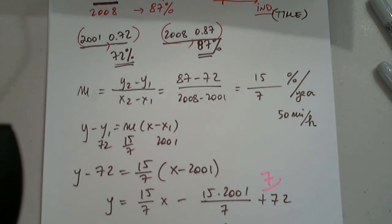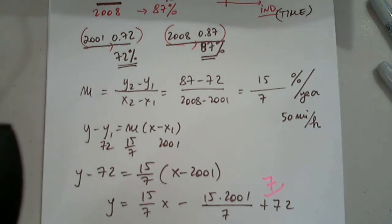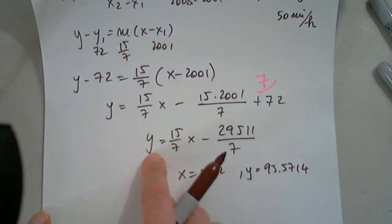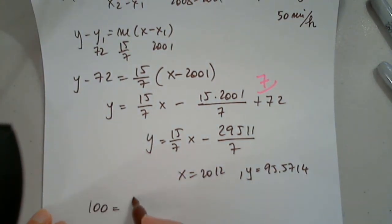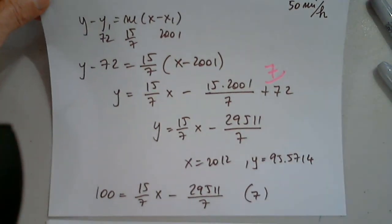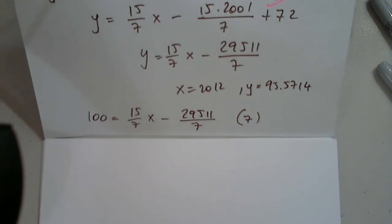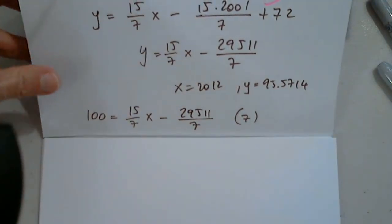Use the equation to estimate the year in which the percentage of users will reach 100. I have to stop sharing, because in this particular question, I have the percentage of 100, so 15 over 7x minus 29511 over 7. This is a linear equation, of course, I'll multiply everything by 7 to eliminate fractions. And let me move this further. Page 2.